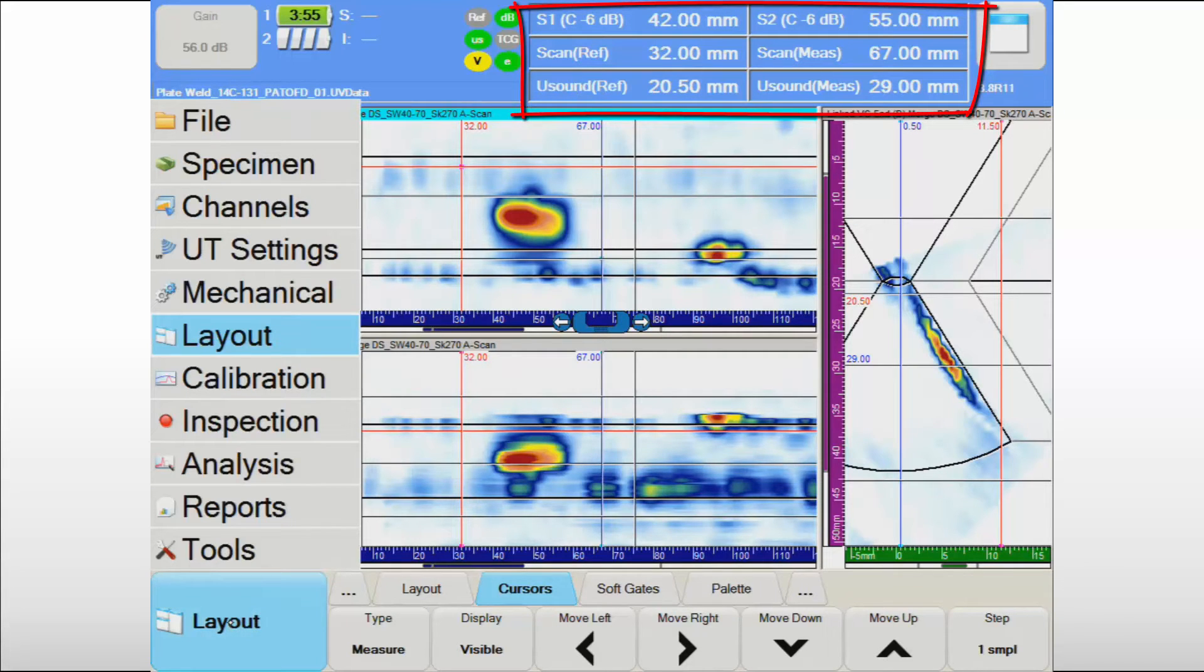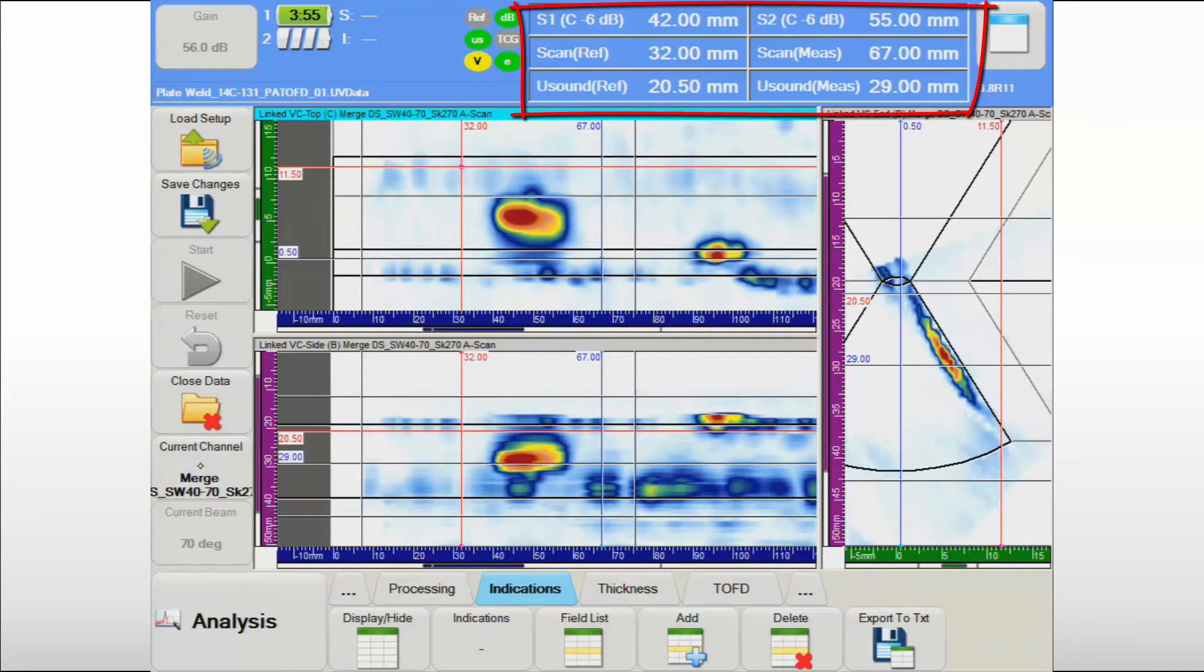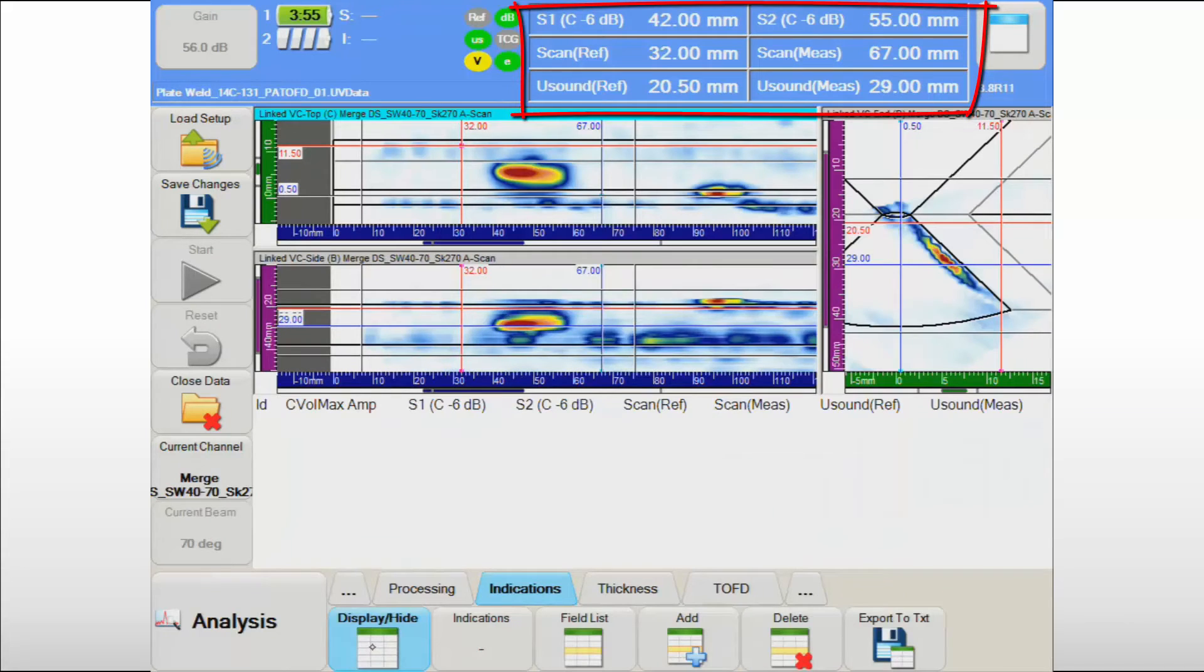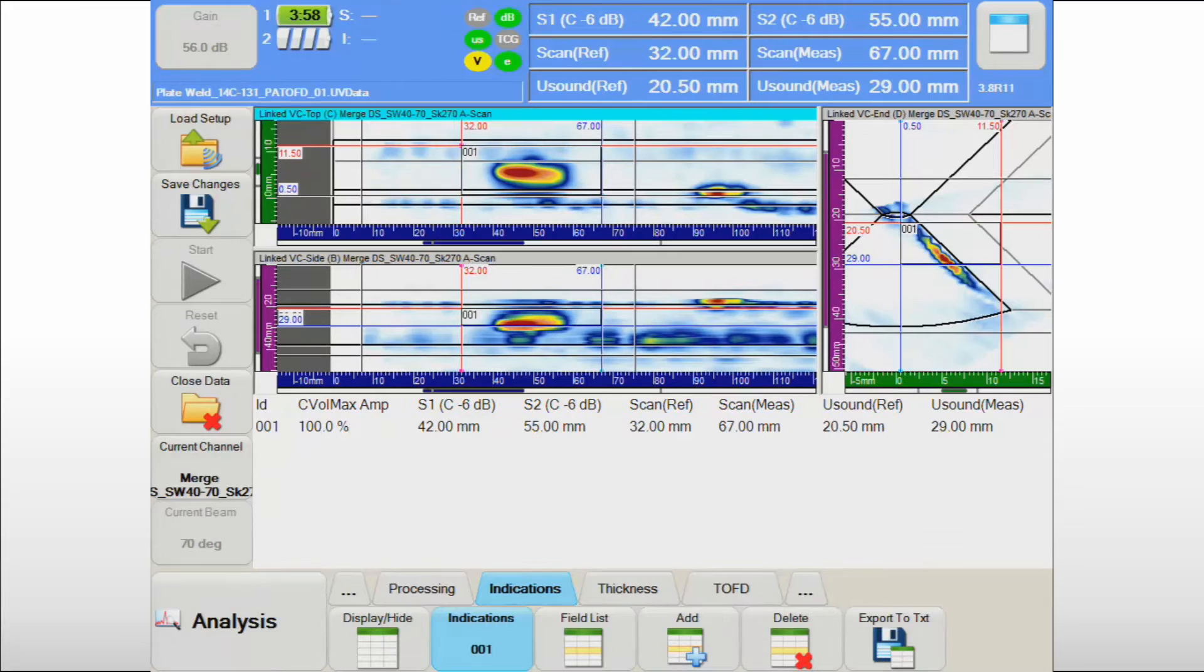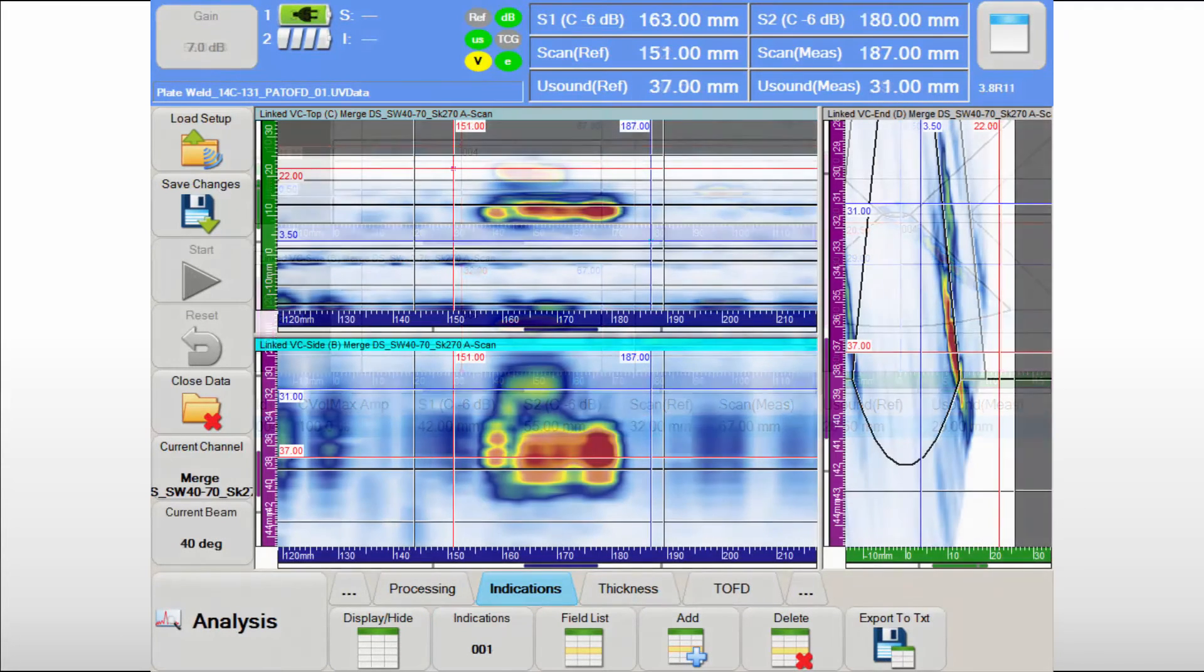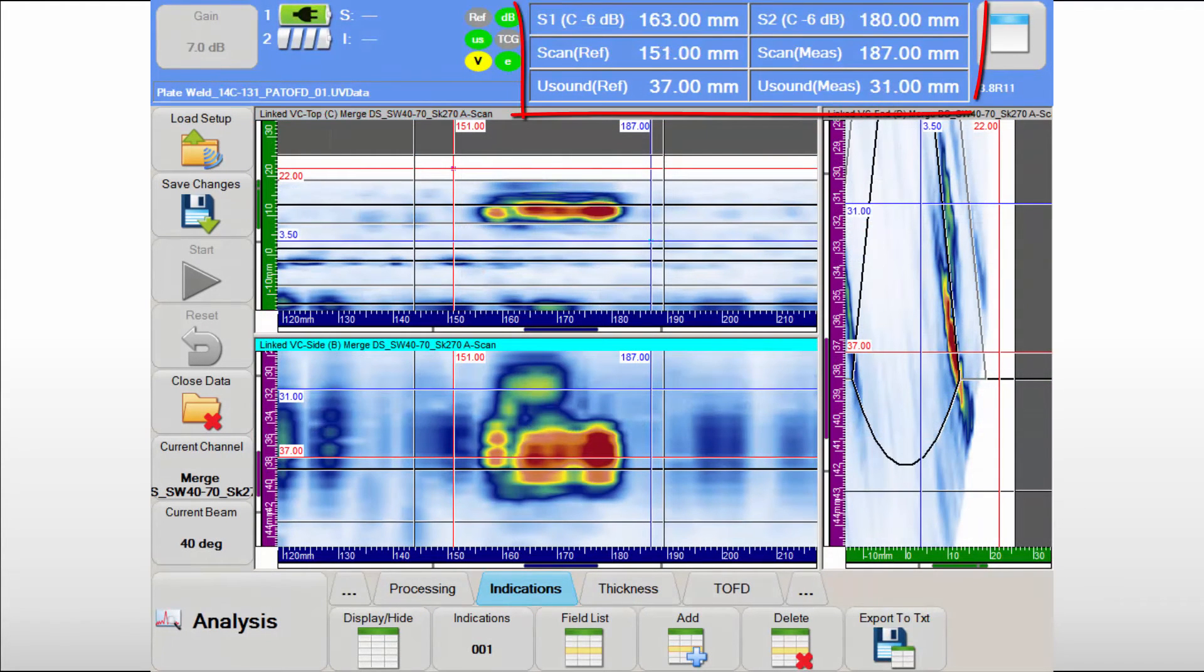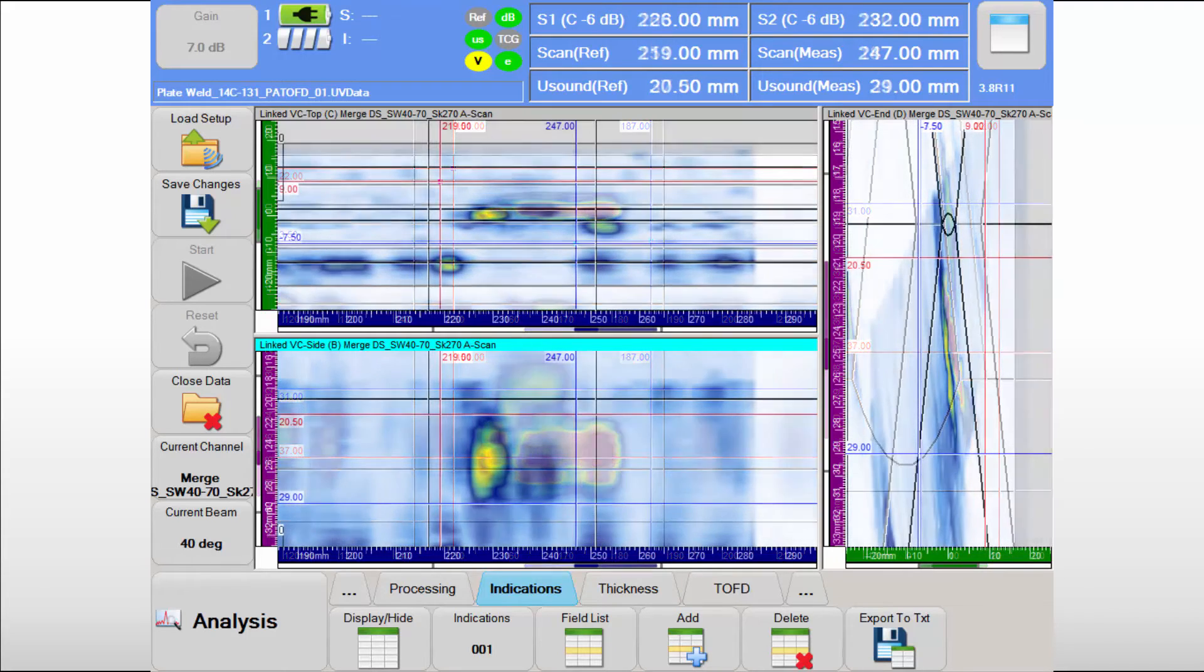Topaz 16 has powerful tools to expedite the detection and sizing process. By quickly positioning the cursors around the indication, the operator can read position and length from the information views, and save the information in the indication table. For the toe crack, length sizing is performed with the same technique. In this case, the phased array data also provides valuable information about the crack depth. By adequately positioning the cursors on the indication in the ultrasound axis, the height of the crack is estimated at 6 mm using the tip and corner signals.